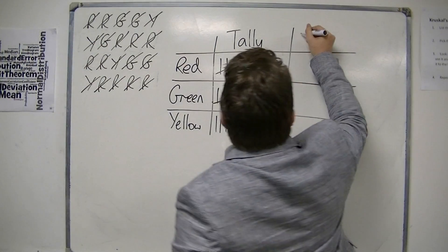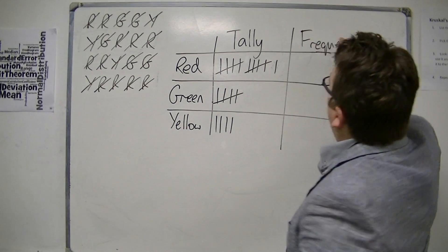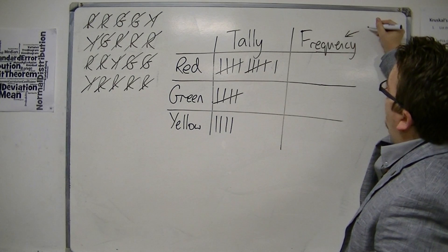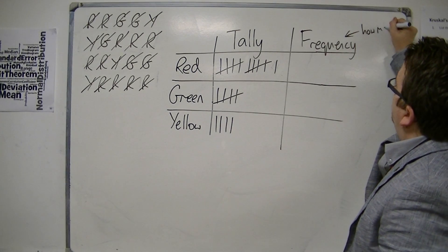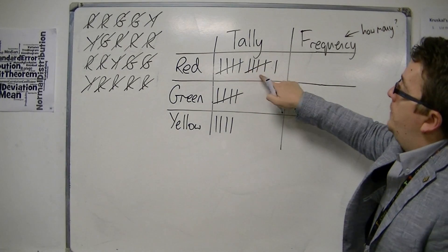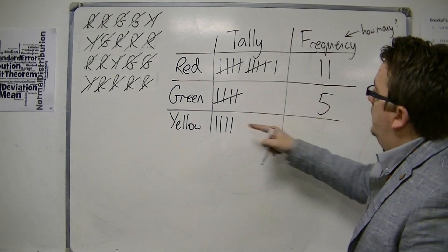So I can then write in a frequency column into the tally chart, and frequency is a posh maths word meaning how many. So here I have five, ten, and eleven. Five, and four.